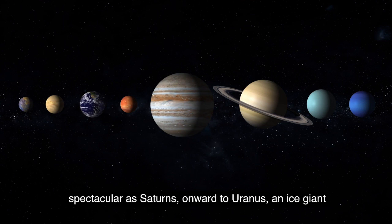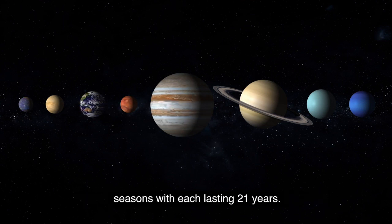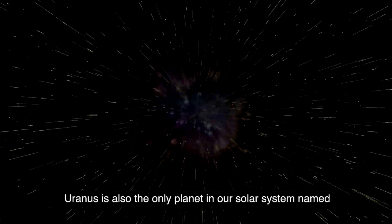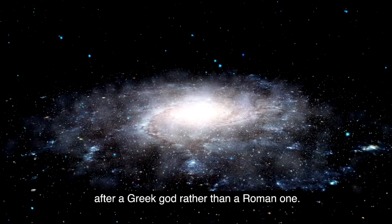Onward to Uranus, an ice giant that's tilted on its side. This unique tilt creates extreme seasons with each lasting 21 years. Uranus is also the only planet in our solar system named after a Greek god, rather than a Roman one.